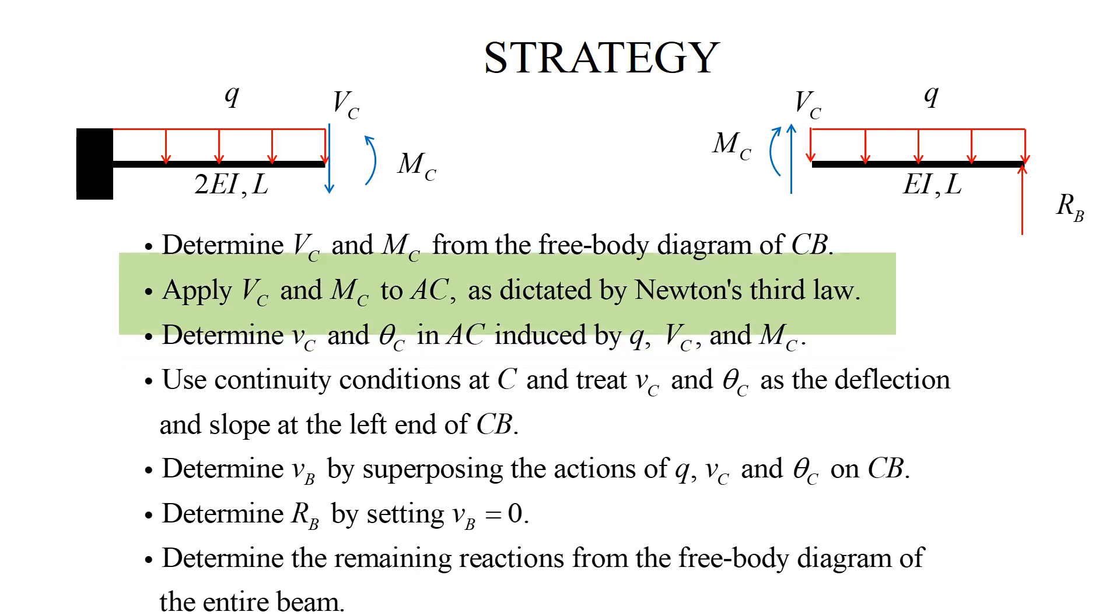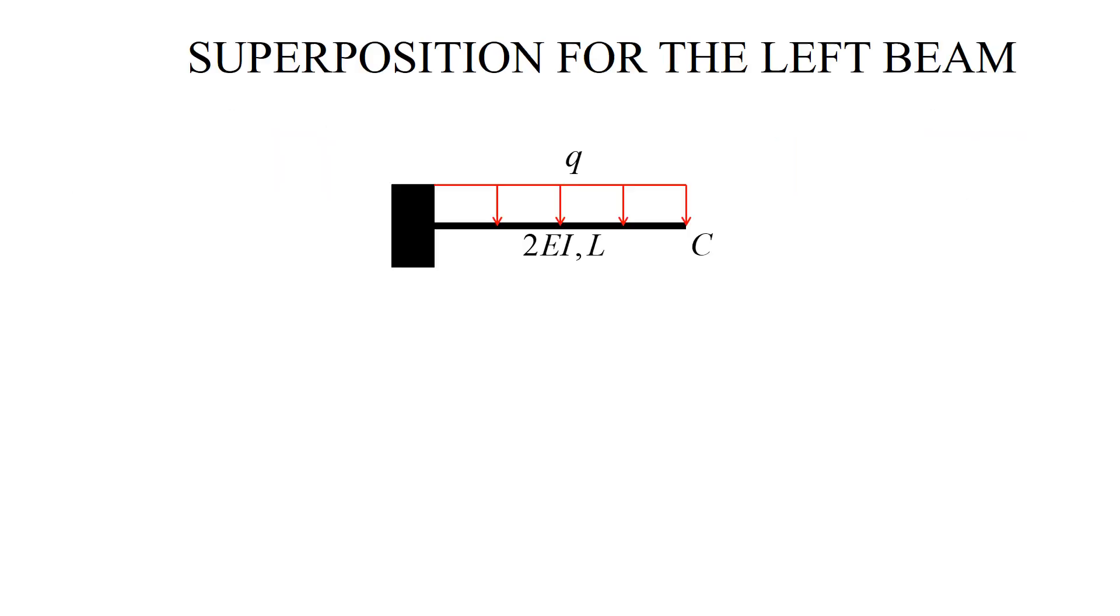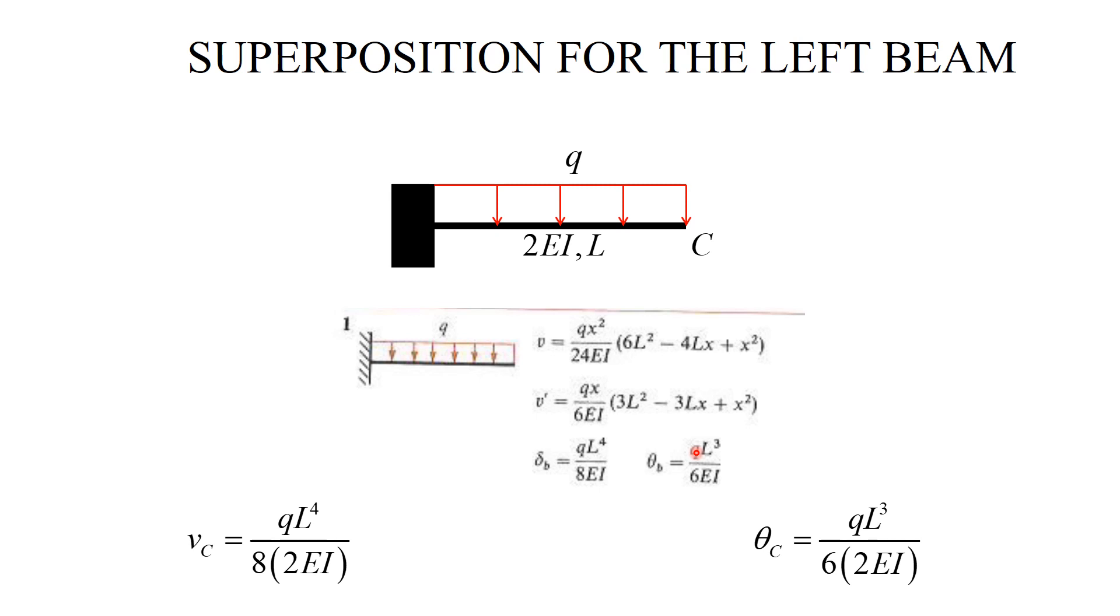At this stage, I am done with the first two steps. Now, I go into the next step to compute V sub C. Here is my beam under uniformly distributed load. Here is the table. I am interested in the deflection and slope at the tip. I literally copy them. The only difference is I am using the stiffness 2EI rather than EI.